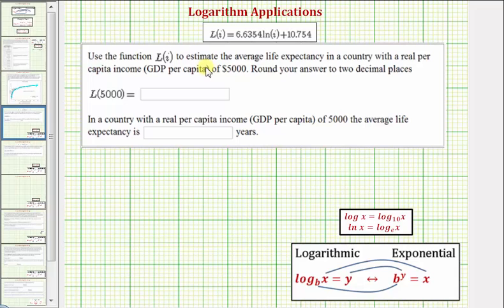Let's look at our first question. We want to use the function L(I) to estimate the average life expectancy in a country with a real per capita income or GDP per capita of $5,000, which means we want to evaluate L(5000).